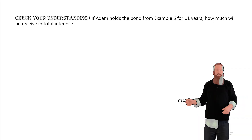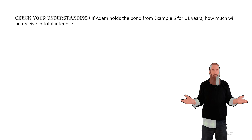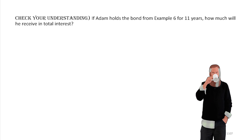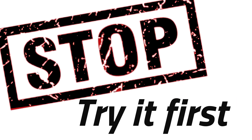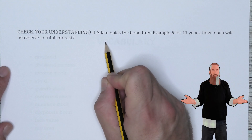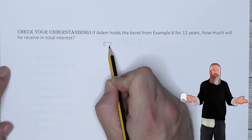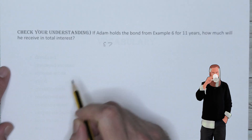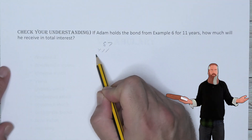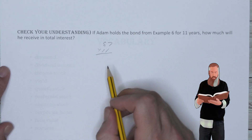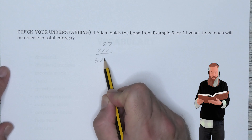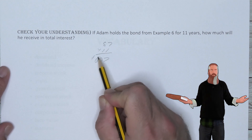Let's check our understanding. If Adam holds the bond from that example for 11 years, how much will he receive in interest? He receives $57 per year, and over 11 years: $57 × 11 = $627.